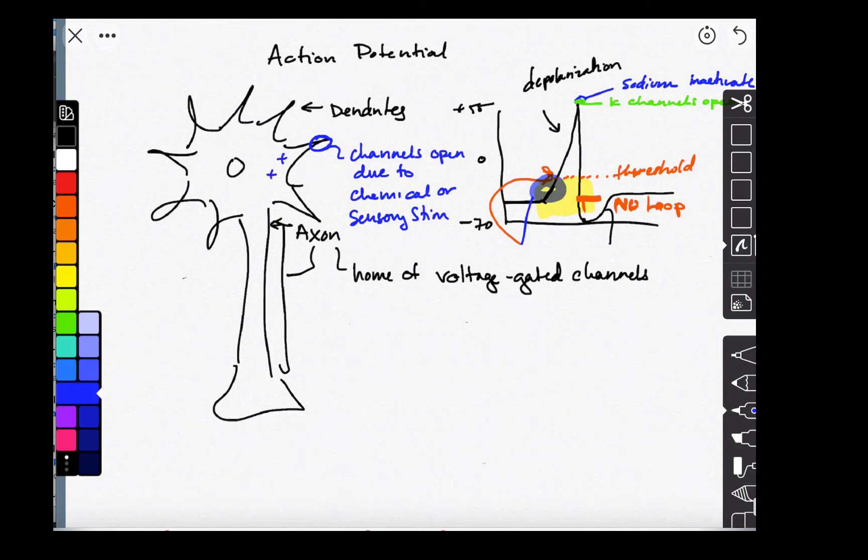And if enough positive ions get to this area, it will start an action potential. And that action potential will travel down the cell. And eventually the cell will release its neurotransmitter, exciting the next cell in line.